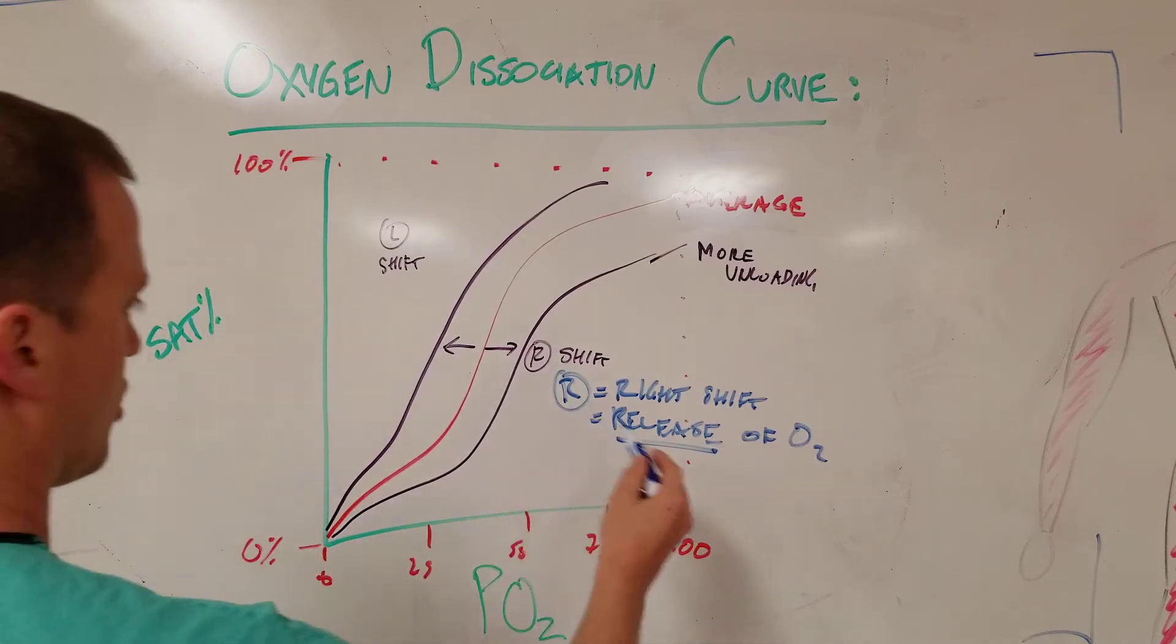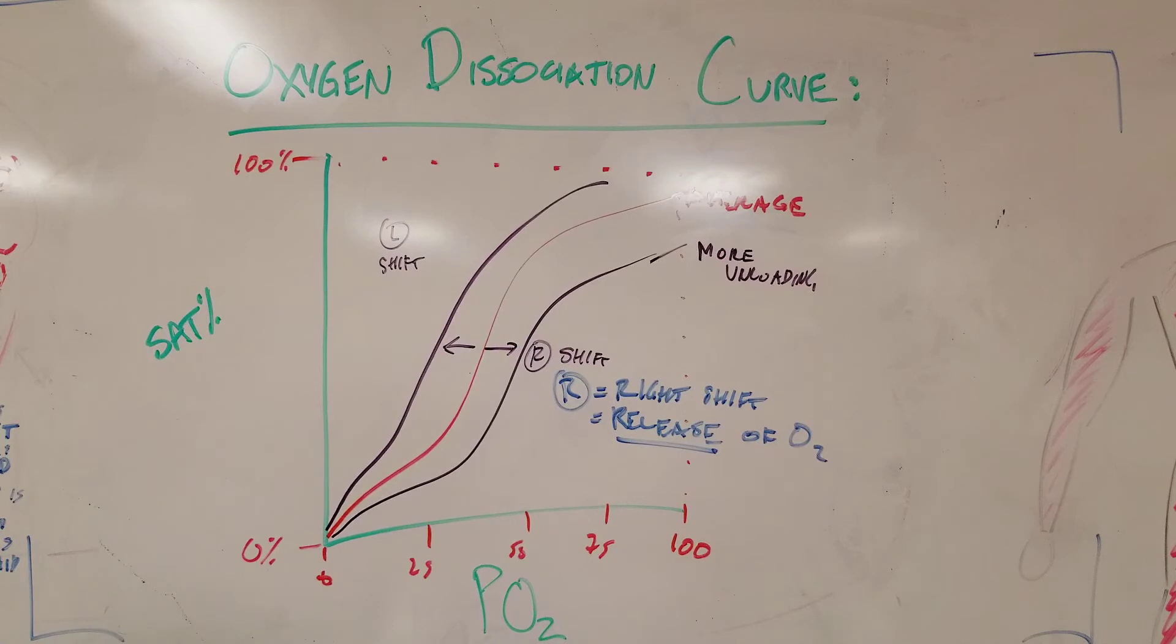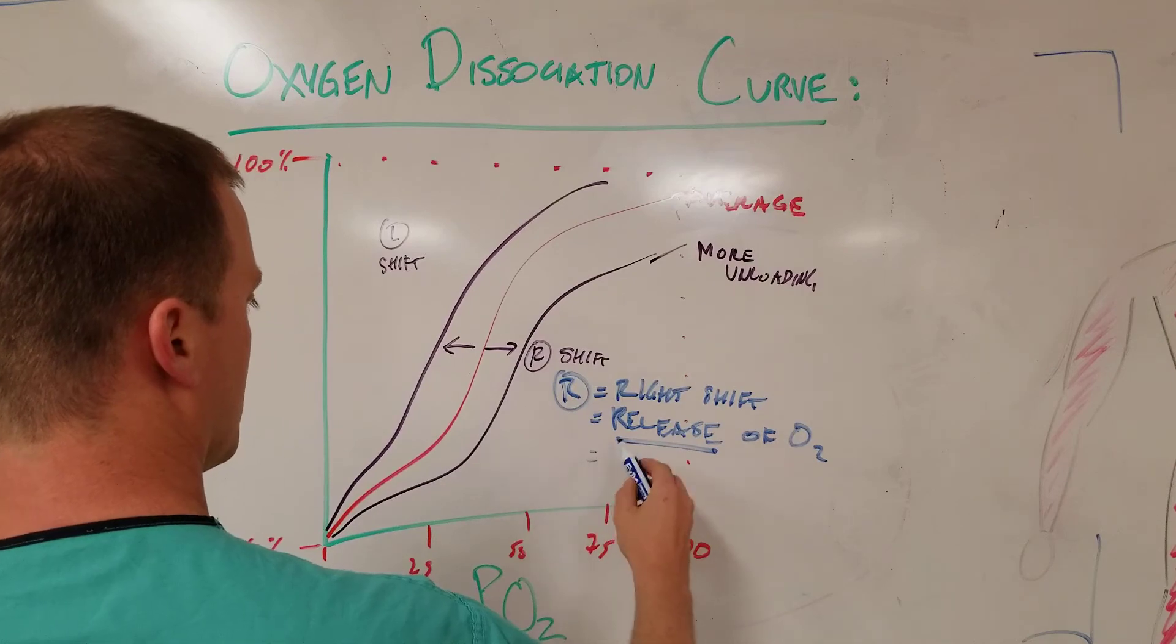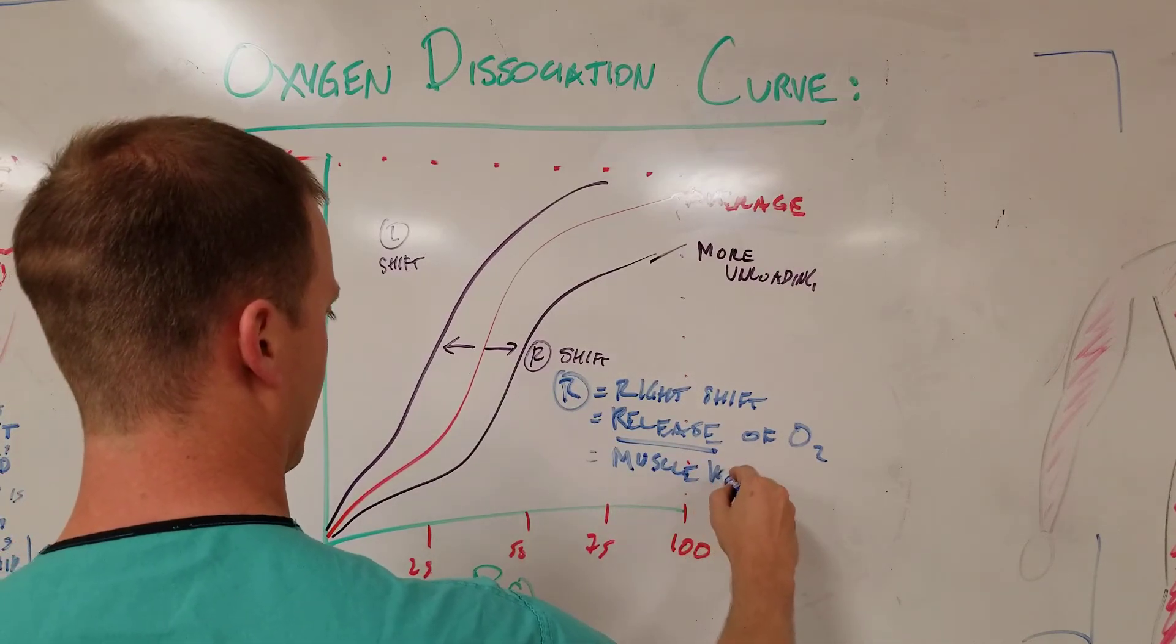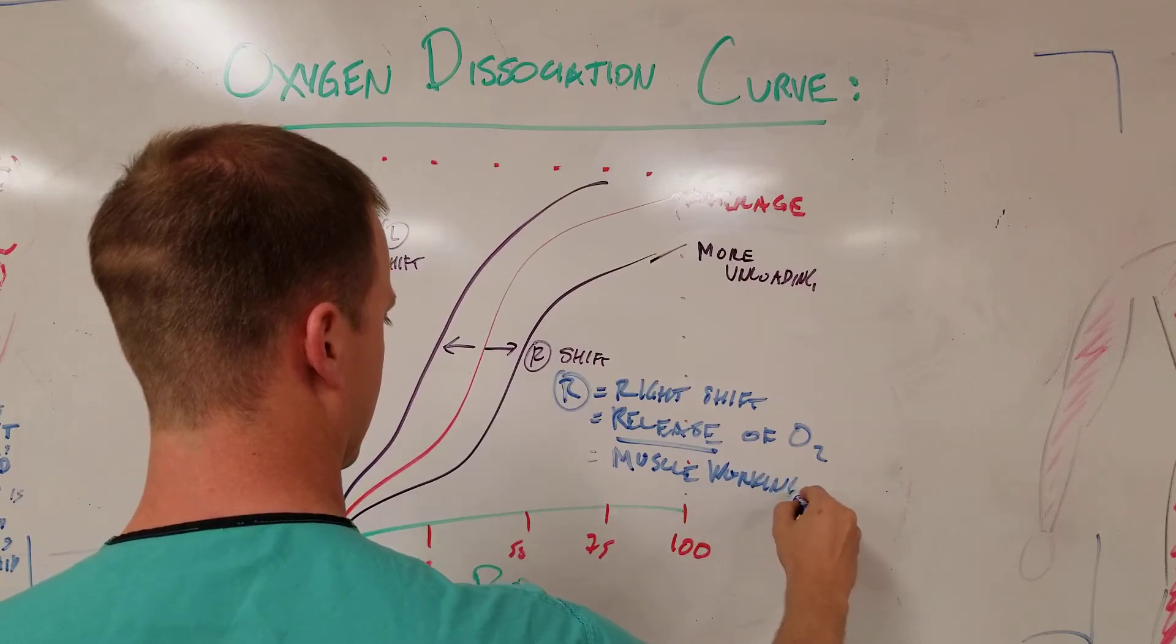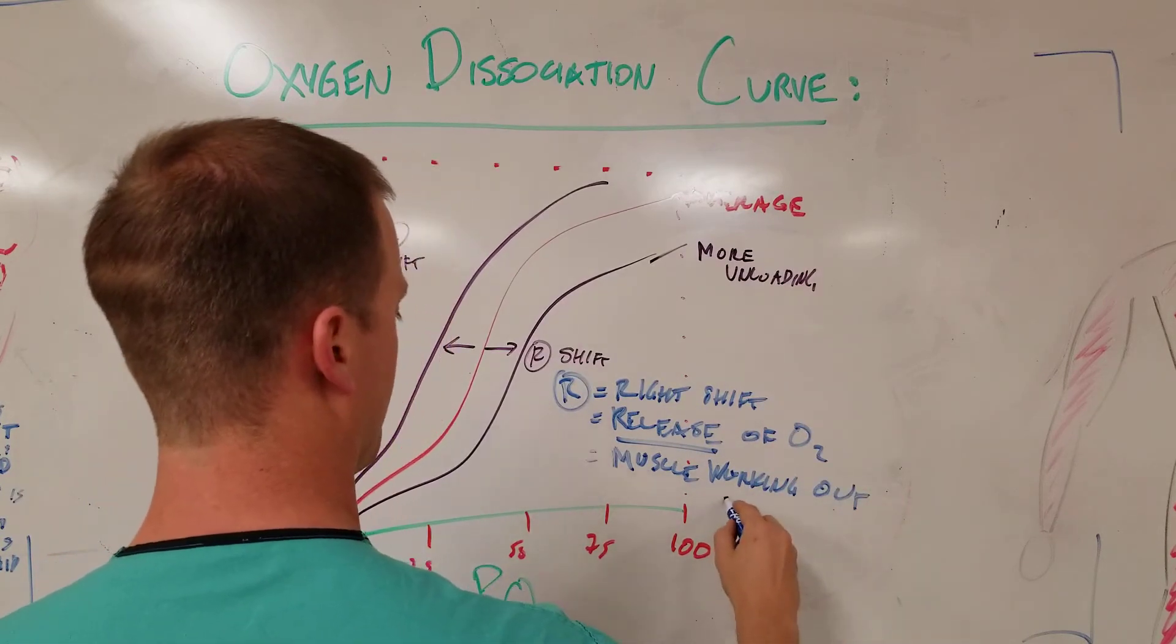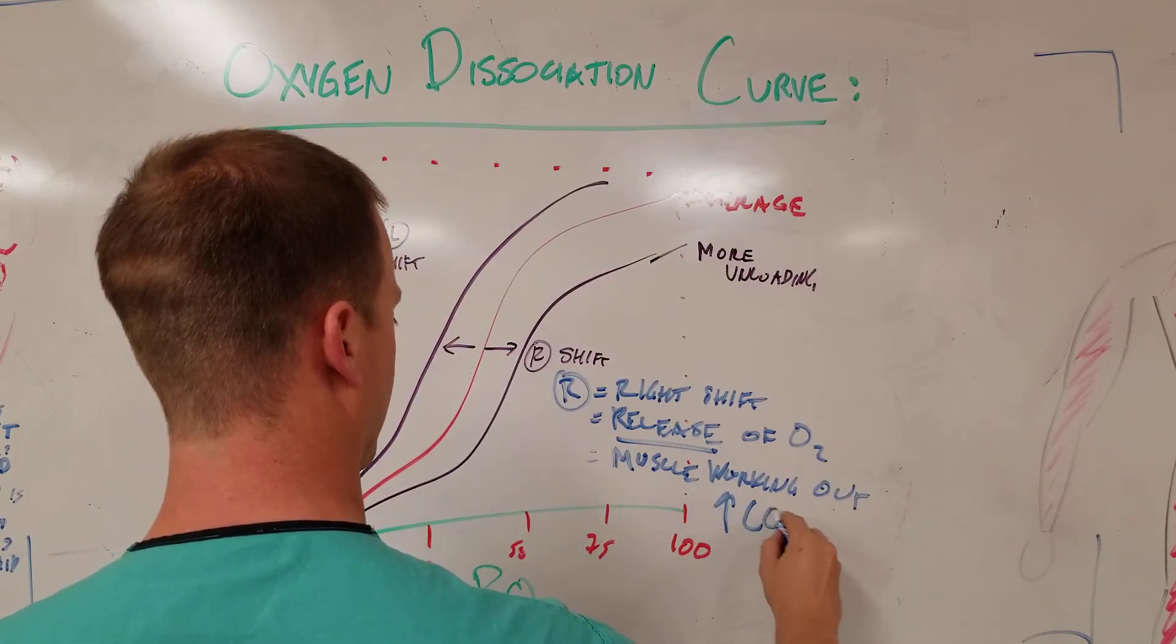What's going to cause this is, the easy way to remember this is think of a muscle that works out. It's going to be hotter. It's going to have more carbon dioxide. It's going to have more acid products. So a right shift equals muscle working out. And so you're going to have a higher partial pressure of CO2.